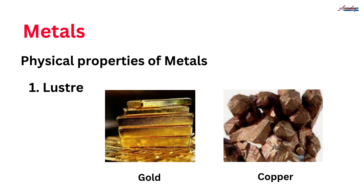In metals' physical properties, let's first understand what physical properties are. Physical properties are the characteristics of a substance which we can observe or measure. We can observe its appearance, texture, color, and shape. We can measure its temperature, melting, freezing and boiling point, volume, and length. So these are all called physical properties.